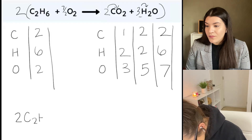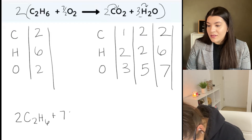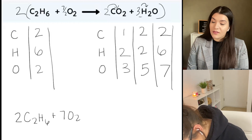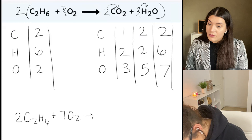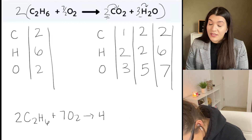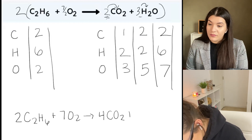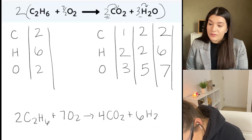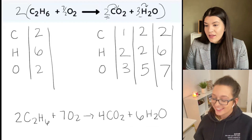So: C2H6, plus 7O2 — the twos cancel — and then this two that's here counts, so we do two times two. Correct. Perfect, that's it. That's correct, yay!